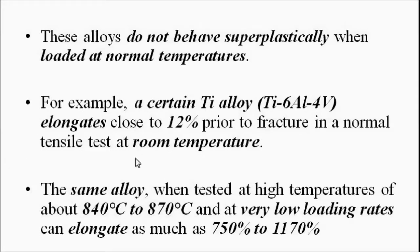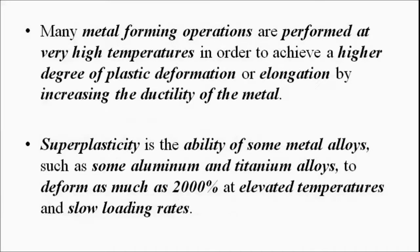This concept of increase in plastic deformation when a metal is subjected to tensile test at high temperatures and slow loading rate is called super plasticity. Super plasticity is the ability of some metal alloys — especially aluminium and titanium alloys — to undergo more plastic deformation, up to 2000 percent, at elevated temperatures and slow loading rates. Many metal processing operations are performed at very high temperatures and slow loading rates to exploit this property and achieve higher deformation.